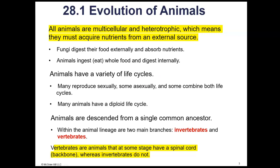All animals are multicellular — we don't have any unicellular animals. If they're unicellular and have traits similar to an animal, we put them in the kingdom Protista. In the kingdom Animalia, all organisms are multicellular and they are heterotrophs, which means they must consume their food — they can't make their own food. Vertebrates are animals that at some stage have a backbone that supports and surrounds the spinal cord, whereas invertebrates do not.